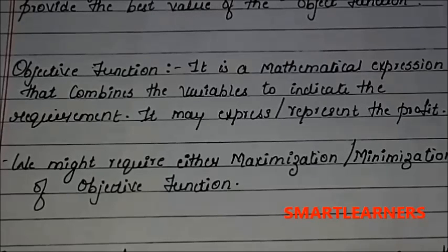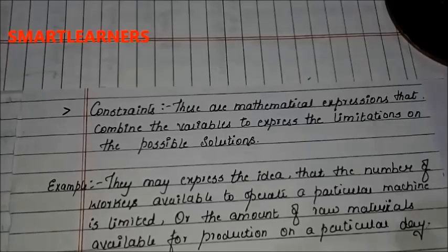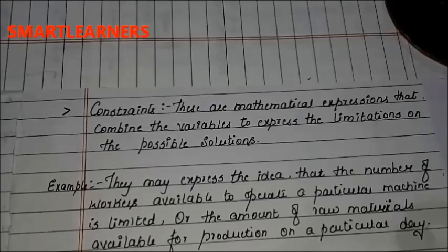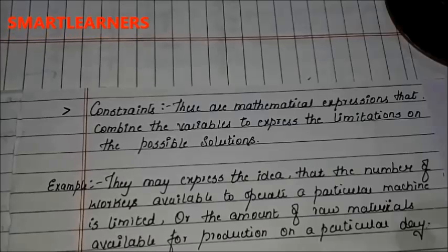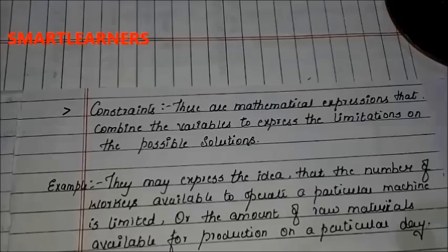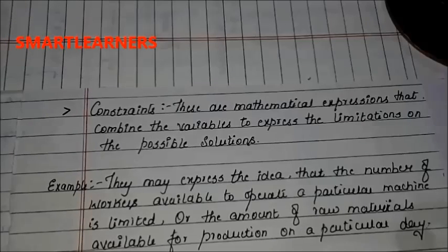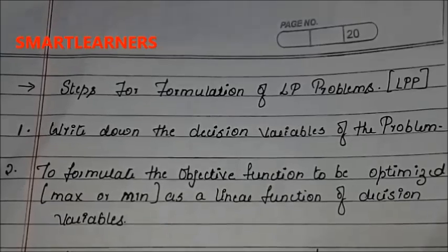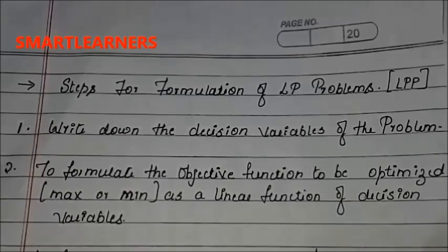We might require either to maximize or minimize the objective function. Constraints are mathematical expressions that combine the variables to express the limitations on the possible solution. For example, they may express the idea that the number of workers available to operate a particular machine is limited, or the amount of raw materials available for production on a particular day is limited. These are your constraints.